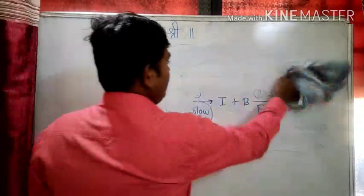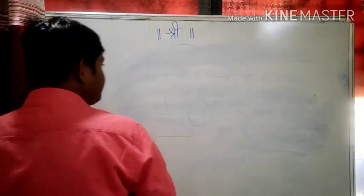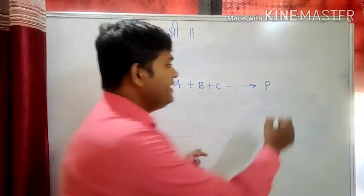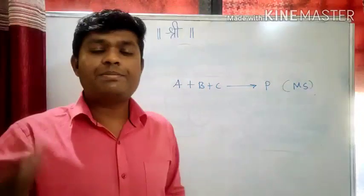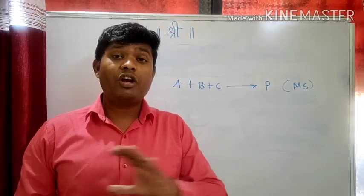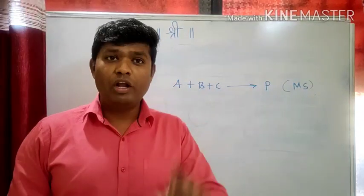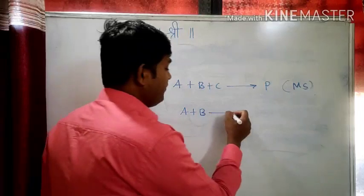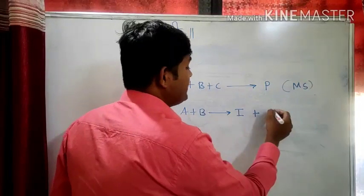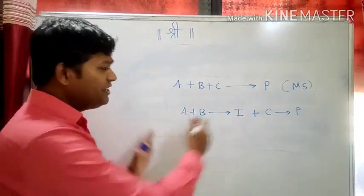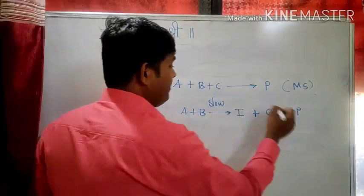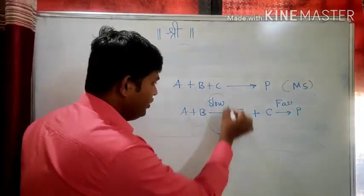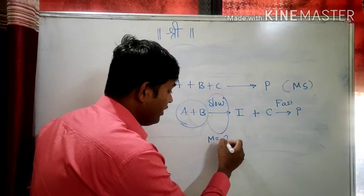Let us take another example — reaction four: A plus B plus C gives product P. Again it is a multi-step reaction. We cannot guess the molecularity directly by looking at the number of molecules. Again we have to predict the slow step of the reaction. Assume that A plus B reacts with each other to form intermediate I in the first step, which then reacts with C to form product P in the second step. The first step is the slow step and the second is the fast step. How many molecules are involved in the slow step? Two molecules are involved, so molecularity is two.